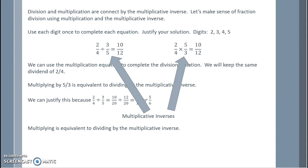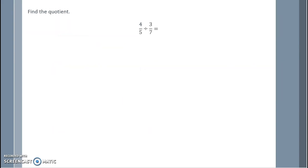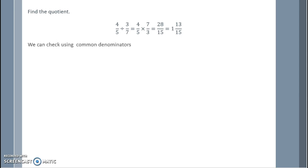Multiplying is equivalent to dividing by the multiplicative inverse. Let's find the quotient: four fifths divided by three sevenths. Using the multiplicative inverse, four fifths times seven thirds equals twenty-eight fifteenths, which is one and thirteen fifteenths. We can check using common denominators: four fifths divided by three sevenths with a common denominator of thirty-five gives twenty-eight thirty-fifths divided by fifteen thirty-fifths, which equals twenty-eight fifteenths, or one and thirteen fifteenths.